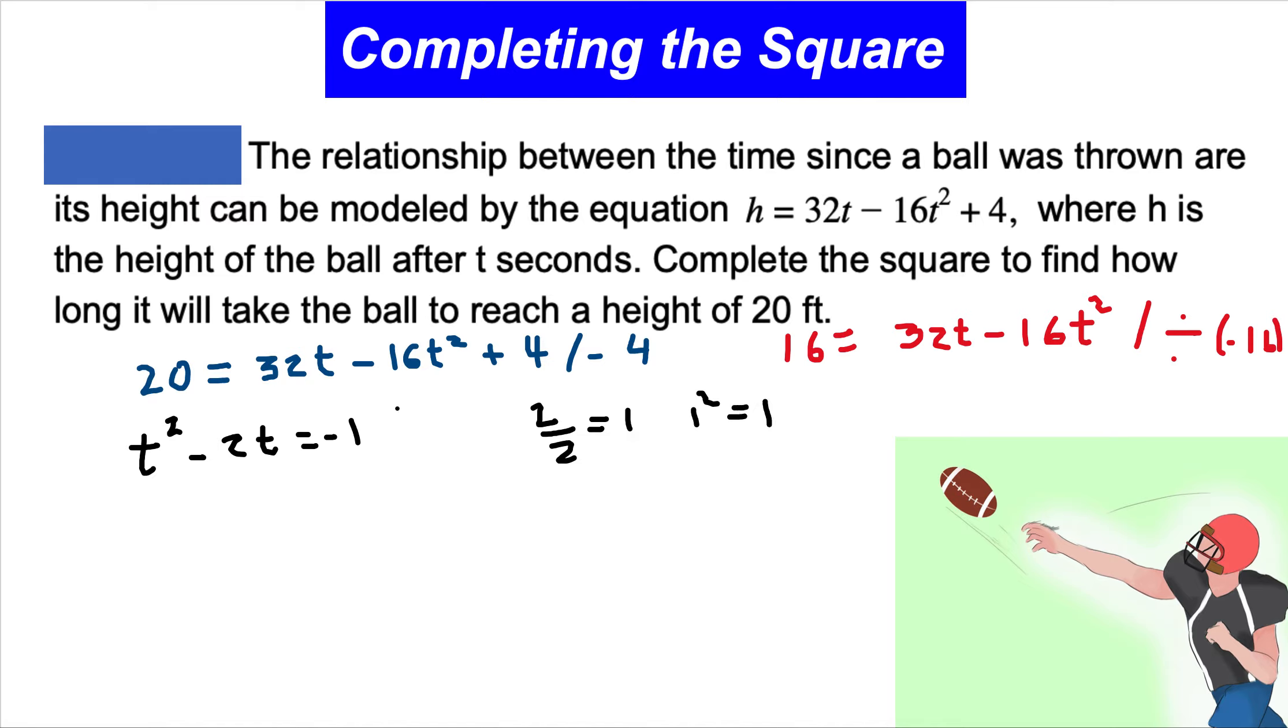Now we add 1² to the entire equation. We get t² - 2t + 1 on the left side, and on the right side we get -1 + 1, which equals 0.